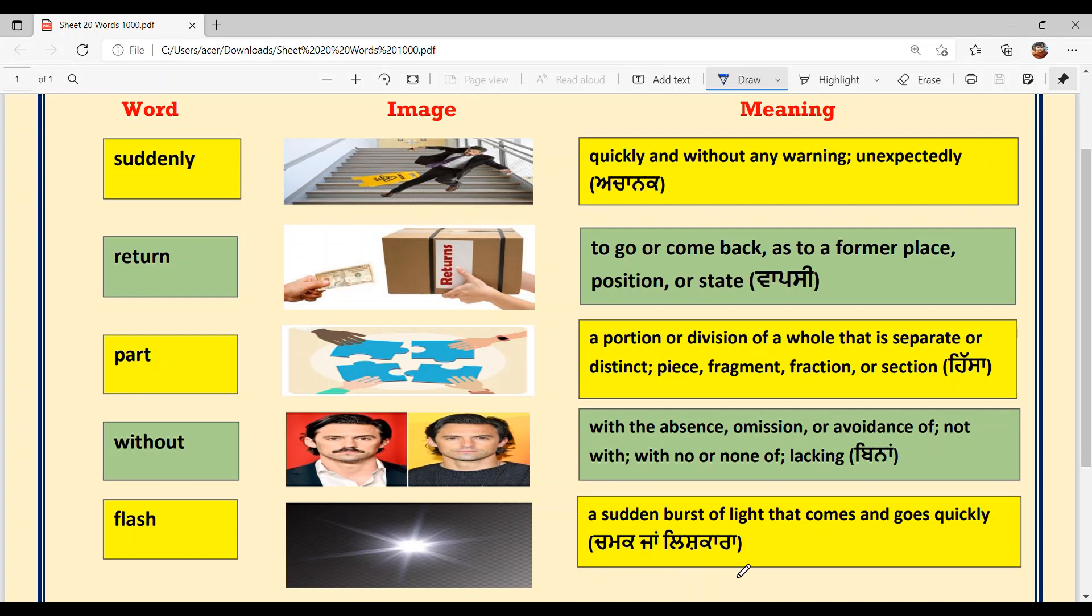Ek flash vajda hai. Jo tu usi photo kish de ho flash on karo, kan de ho na kadhi kadhi night mode cha. So ho flash viy ho sakda hai. A sudden burst of light that comes and goes quickly. Ek dam jo chak di hai thai bujjan di hai, jag di bujjan di hai, ho flash kande hai.